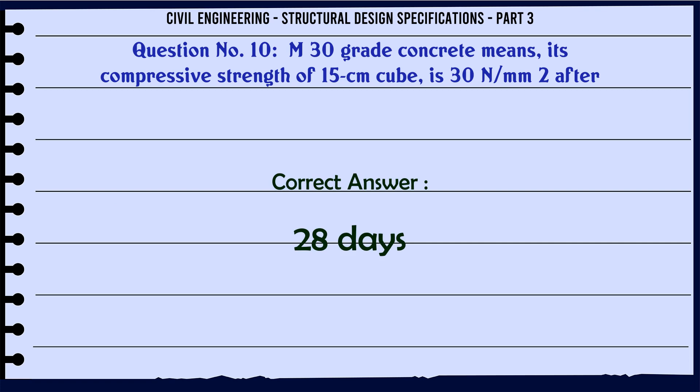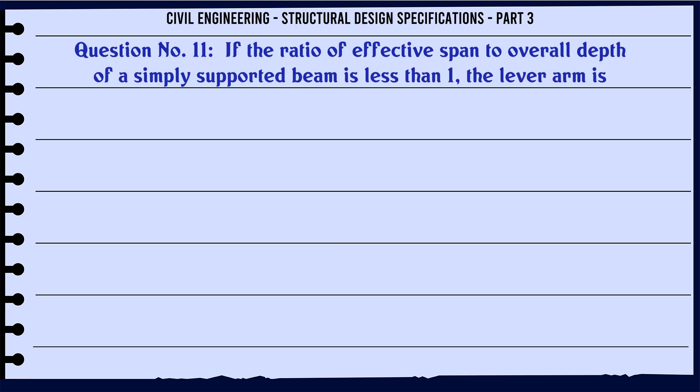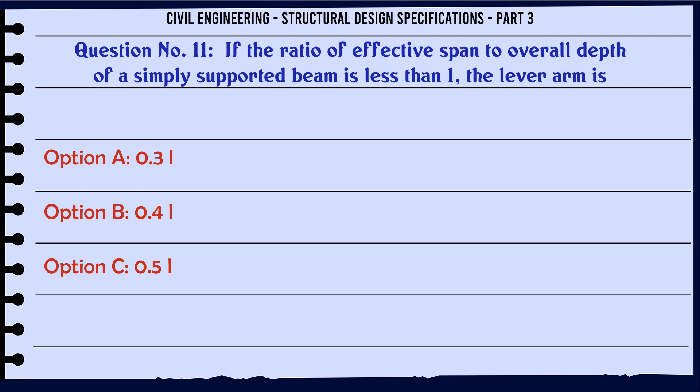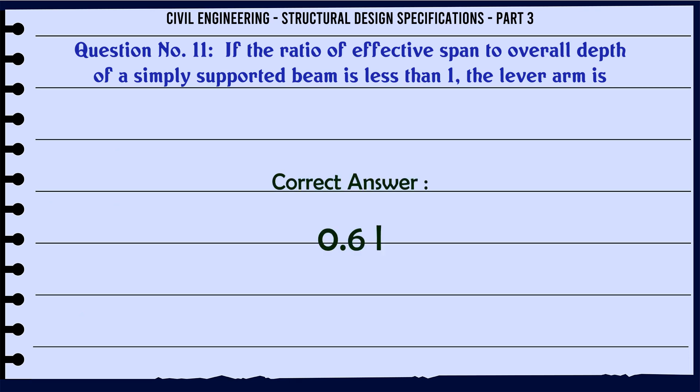If the ratio of effective span to overall depth of a simply supported beam is less than 1, the lever arm is: a. 0.3l, b. 0.4l, c. 0.5l, d. 0.6l. The correct answer is: 0.6l.